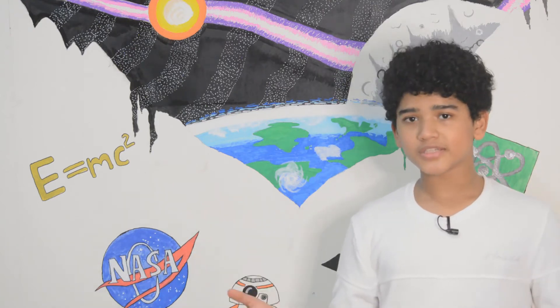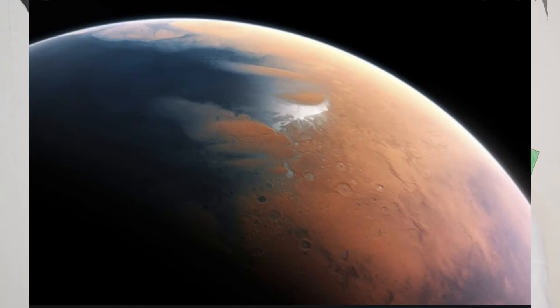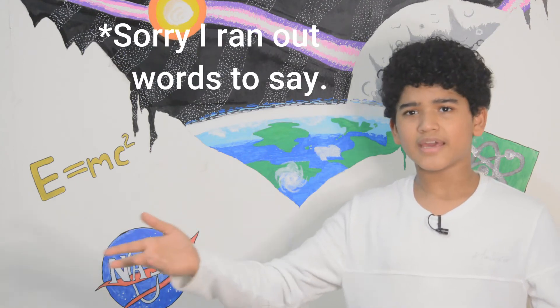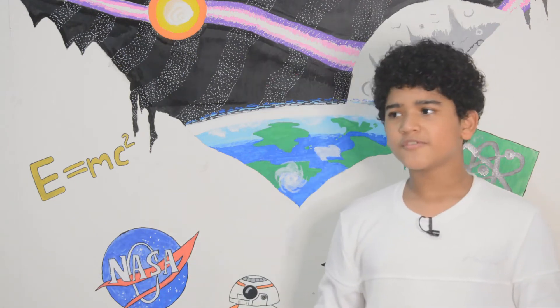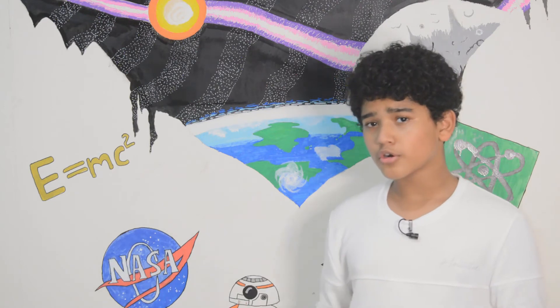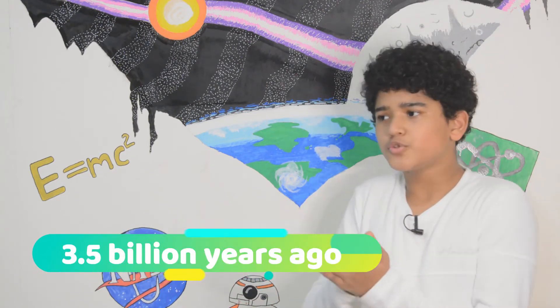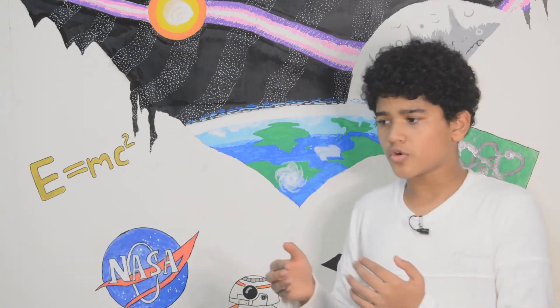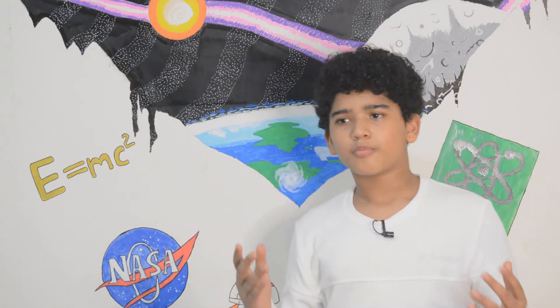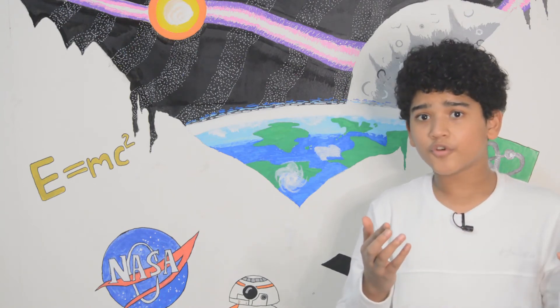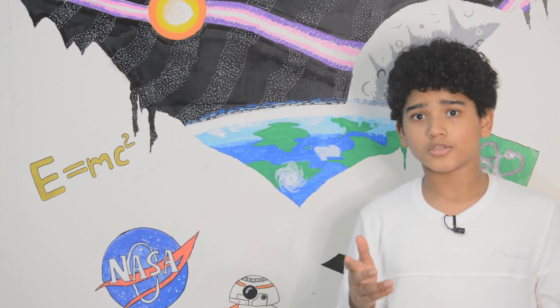Mars was once just like Earth. It had rivers, lakes, oceans, seas, and ponds. The first form of life discovered on Earth was 3.5 billion years ago, and that's when water was on the surface of Mars. And that's why we think that life could have existed on Mars.